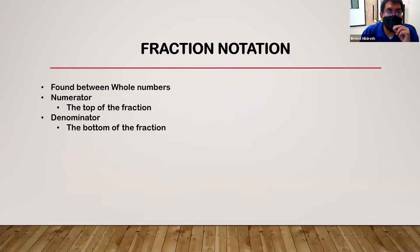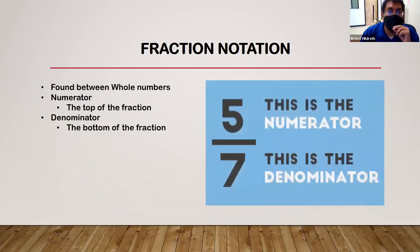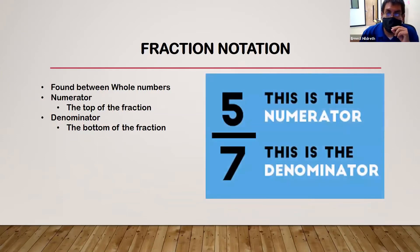Fraction notation: a fraction can be found between whole numbers. The numerator is usually the top of the fraction and the denominator is the bottom of the fraction. So as you can see here, with five-sevenths, the five is the numerator and the seven is the denominator.